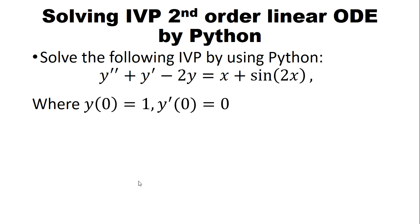The initial value problem we will solve is: Y'' + Y' - 2Y = X + sin(2X), with initial conditions Y(0) = 1 and Y'(0) = 0.